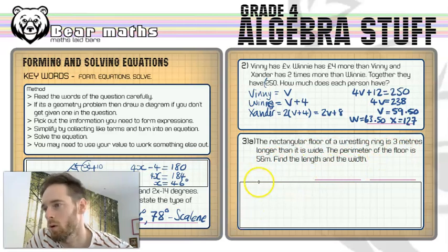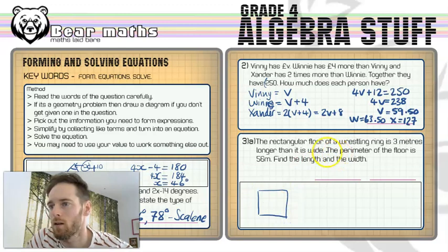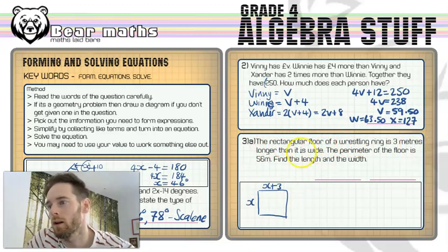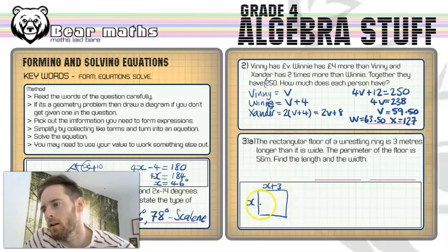Now the rectangular floor of a wrestling ring is three meters longer than it is wide. The perimeter of the floor is 56 meters. Find the length and the width. So again, we've got a geometry style problem here. Perimeter is the distance around the outside of a shape. And let's just draw that there. It doesn't have to be perfect. Now, if we've got a width of x, and we've got a length of x plus three meters. So the rectangular floor is three meters longer than it is wide. So the width is x, we didn't know what that was, but the length is three meters more than that thing that we didn't know.